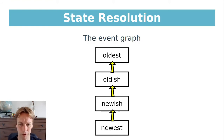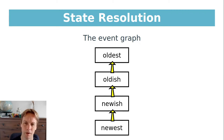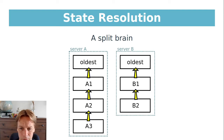Let's talk about the event graph. By 'graph' I mean dots with lines between them — events (things that happened, like someone becoming a member or being banned) where a newer event always refers back to at least one previous event. In a normal case this looks like a clean chain. But if there's a breakdown in communication, two servers can end up with different event graphs: both share an 'oldest' event, but then one server has events A1, A2, A3 while the other has only B1 and B2 — a fork.